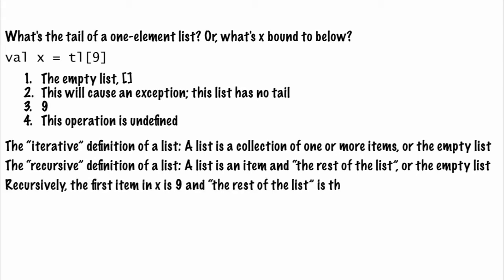Using the recursive definition, the list x in this ML expression is the item 9 and the rest of the list, which is the empty list. Since tail returns the rest of the list, x is the empty list.